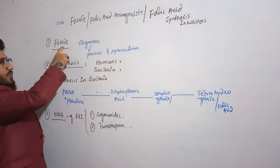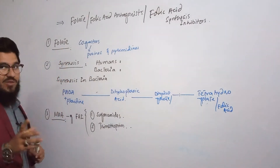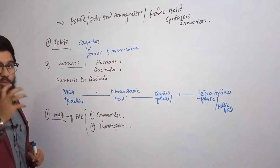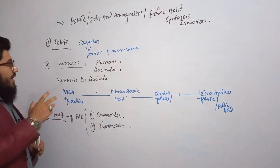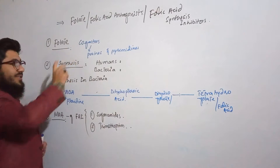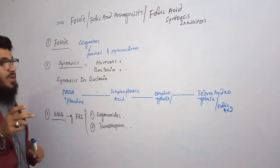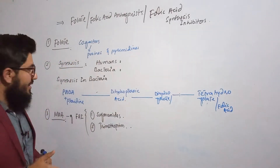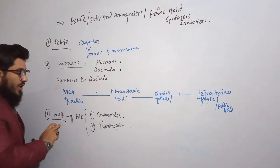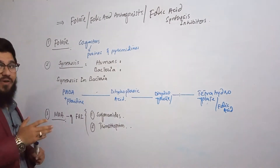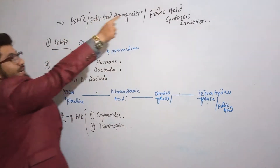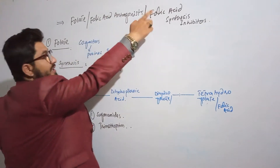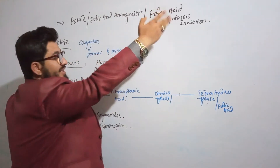Point number one will be: what is folate? We'll learn about folate or folic acid, what it actually is. Then we'll talk about the synthesis — how folate or folic acid is actually synthesized. And in the third point, we'll talk about the mechanism of action of the folate antagonists, folic acid antagonists, or the folic acid synthesis inhibitors.